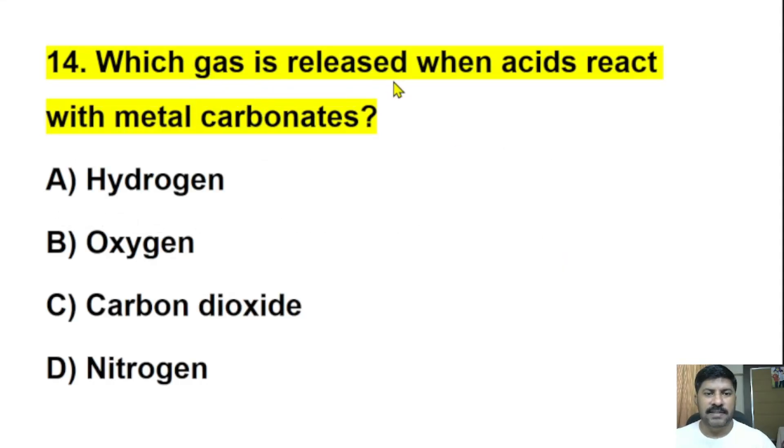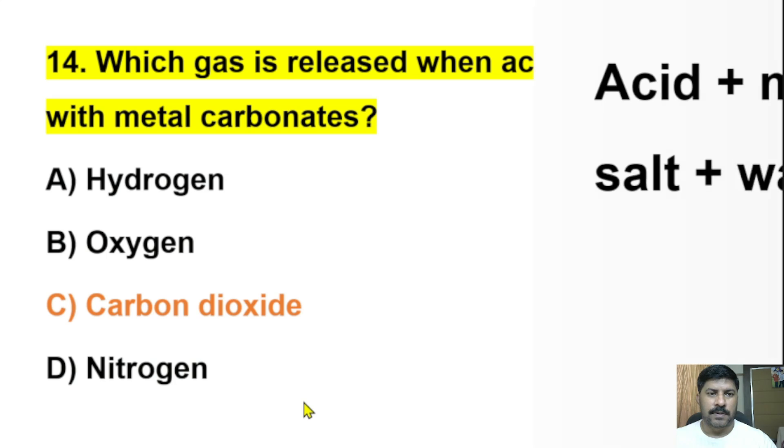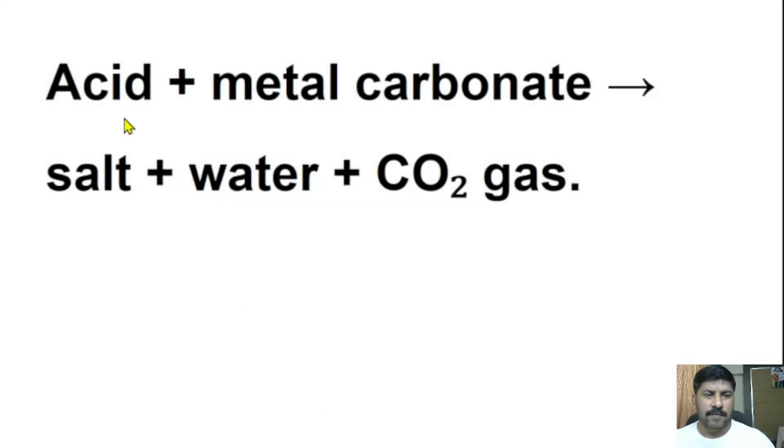Fourteenth question: Which gas is released when acids react with metal carbonates? Hydrogen, oxygen, carbon dioxide, or nitrogen? The correct answer is carbon dioxide. By the reaction of acids with metal carbonate, it will release salt, water, and carbon dioxide gas.